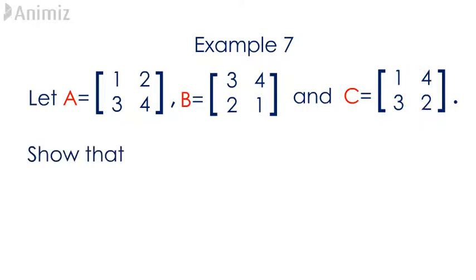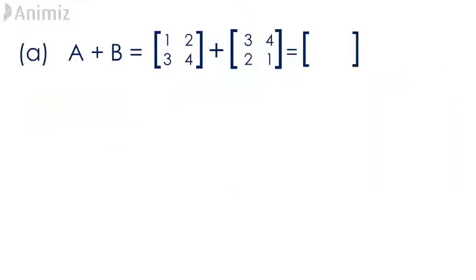Show that A plus B transpose is equal to A transpose plus B transpose. In order to find A plus B transpose, we first need to find A plus B by adding the corresponding elements of both matrices.